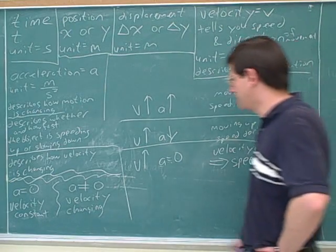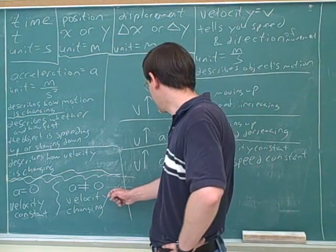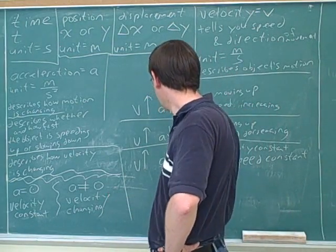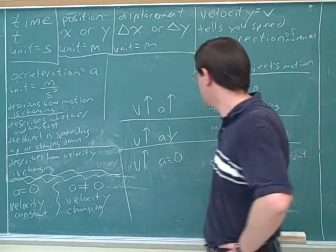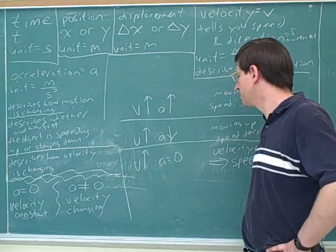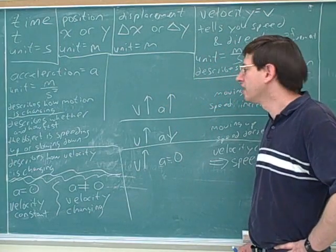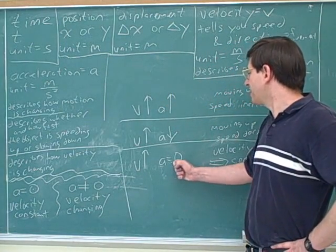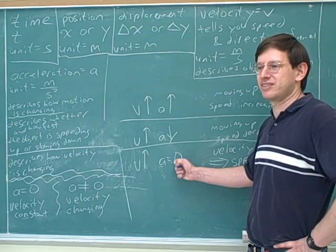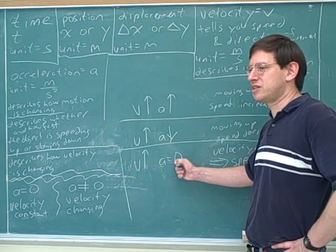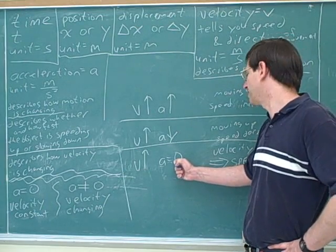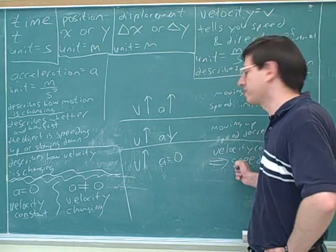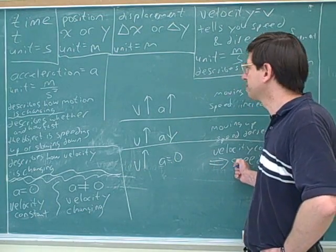We've seen that the acceleration doesn't tell you which way you're moving. For example, if the acceleration is zero, that doesn't mean the object is motionless. It's just moving with constant speed.